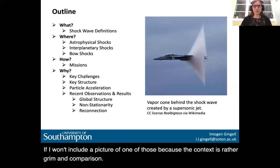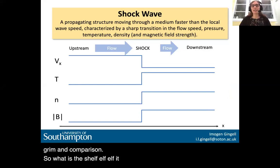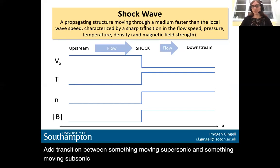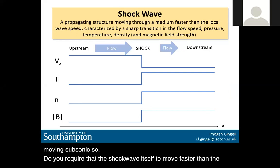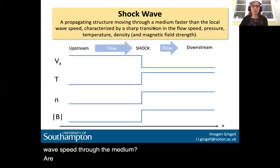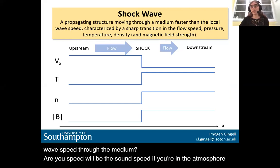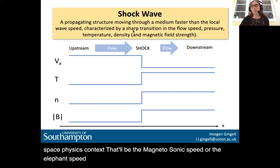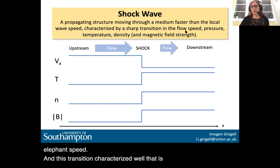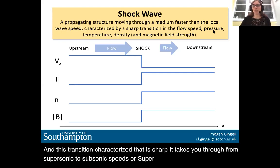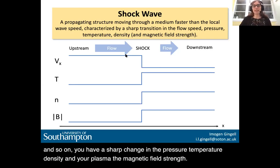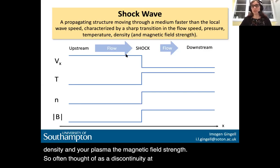What is the shock layer itself? It is a propagating structure that is a transition between something moving supersonic and something moving subsonic, requiring the shock wave itself to move faster than the local wave speed through the medium. That wave speed will be the sound speed in the atmosphere, or in space physics context, the magnetosonic speed or the Alfvén speed. This transition is sharp — it takes you from supersonic to subsonic speeds, with a sharp change in pressure, temperature, density, and if you're in a plasma, the magnetic field strength. It's often thought of as a discontinuity, at least at global scales.